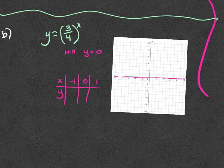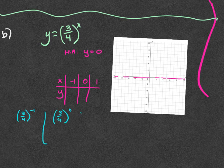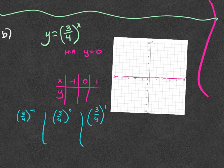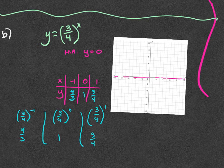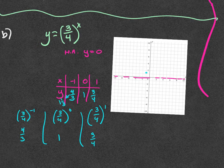Now I plug in. Three-fourths to the negative one: it flips — four-thirds. Three-fourths to the zero: one. Three-fourths to the first: three-fourths. Now going to the graph — negative one gives one and one-third, zero gives one, and one gives three-fourths. Because it's a fraction as the base it's actually decreasing — flipping direction — getting as close to the x-axis on one side and raising on the other.